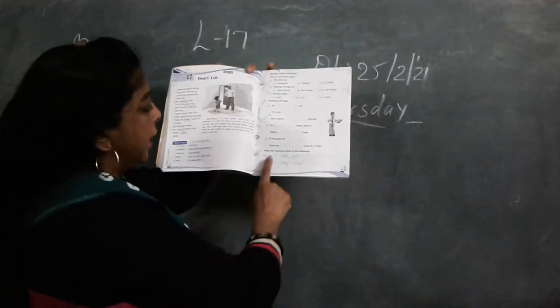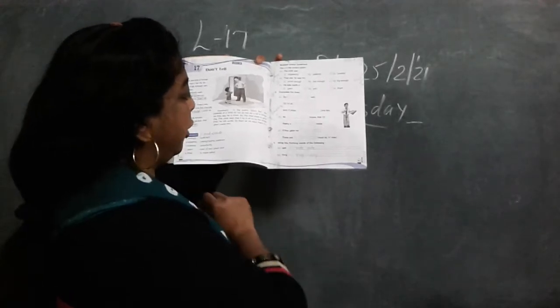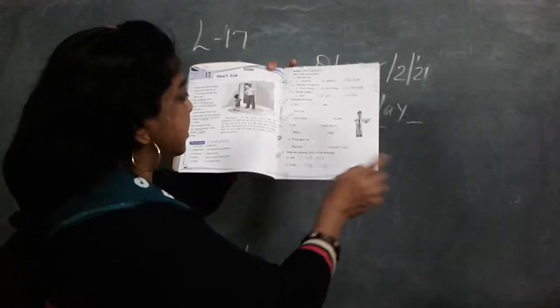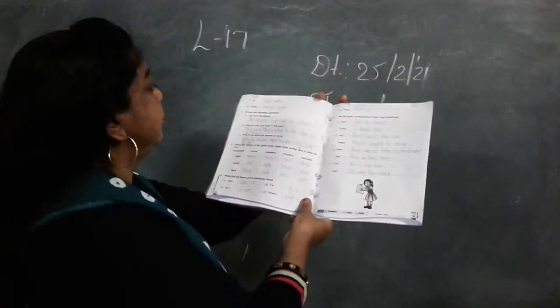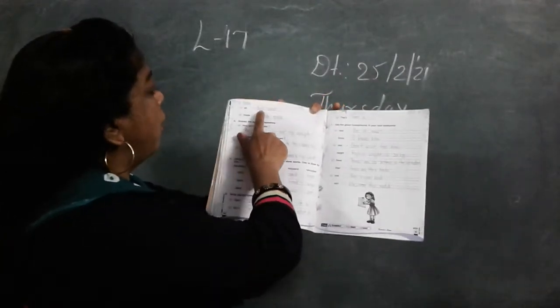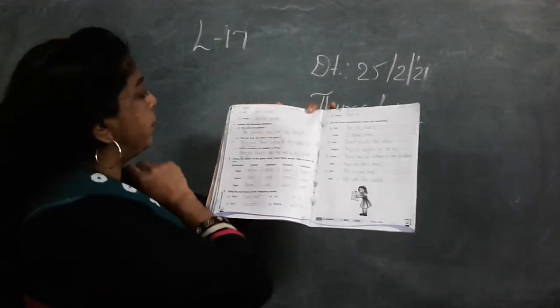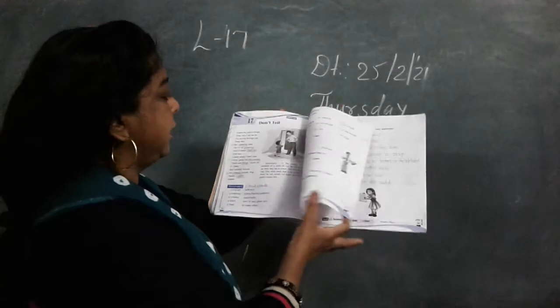So, now, question number three. Write the rhyming words of the following. Wave, ring, gate. Thing, ring, sing. All, ball, wall. Inside, beside, pride.